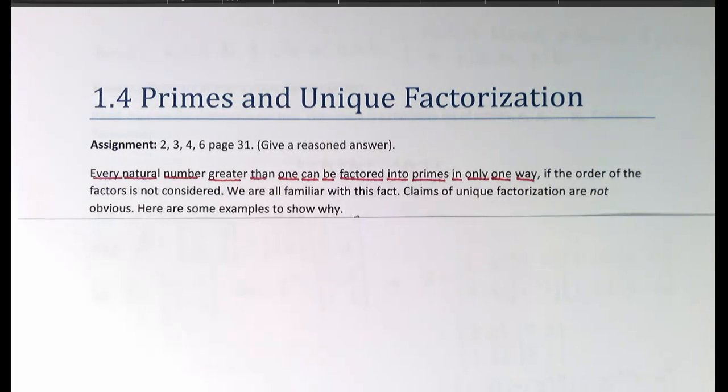After all, everyone knows that 15 is 3 times 5 and there's no other way to do it, and everyone knows that 12 is 2 times 2 times 3 and there's no other way to factor it into primes either. Well, when we start looking at a broader array of systems, we begin to understand that claims of unique factorization are not obvious. Here are some examples.